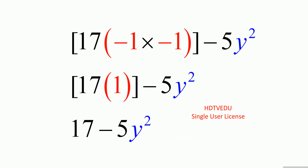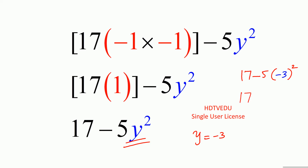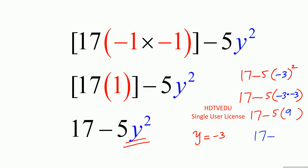We substitute for y. What is y? Y is equal to negative 3. So 17 minus 5, and in the space occupied by y we substitute negative 3, giving us 17 minus 5 times negative 3 squared. What is negative 3 times negative 3? It is positive 9. So you get 17 minus 5 times positive 9.